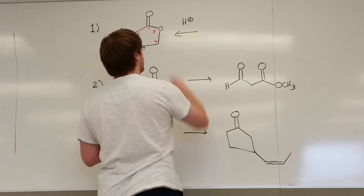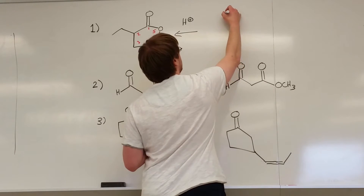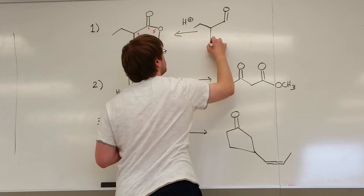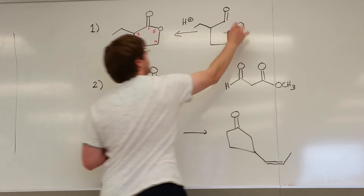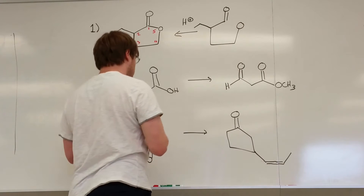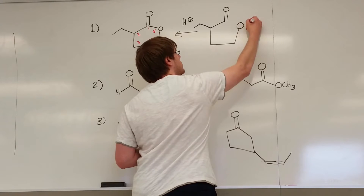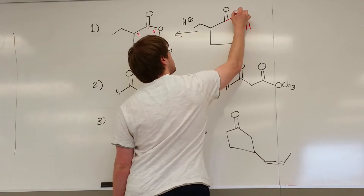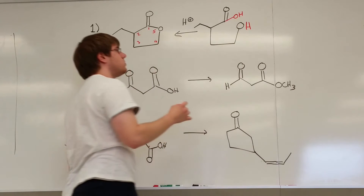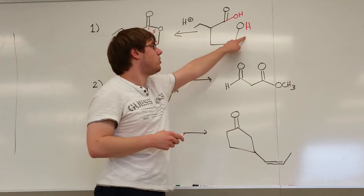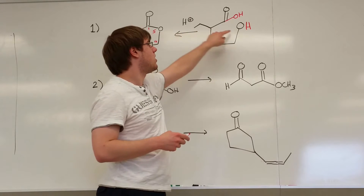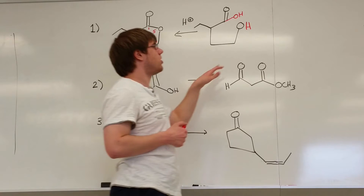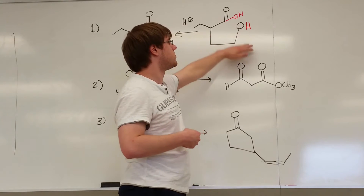I'm going to erase the bond between carbon 1 and carbon 5 but keep everything else the same for now. The oxygen that was part of the ring becomes an OH, and the carbon that had the C=O also gets an OH. So I have a carboxylic acid and an OH somewhere in a chain together that through H+ come together to make this ring. Now I can start cutting carbons apart because I have these two groups separated.